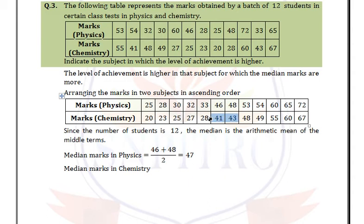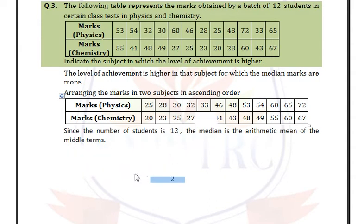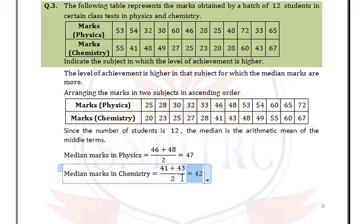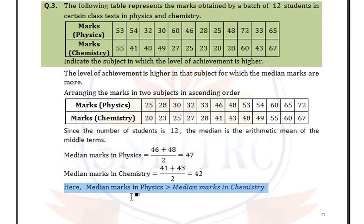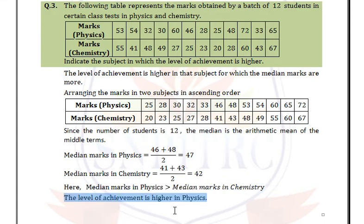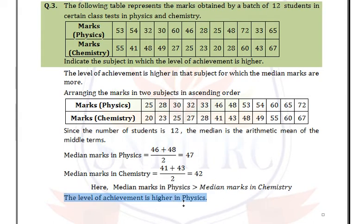The median marks in physics is 47 and in chemistry is 42. Since the median marks in physics are greater than the median marks in chemistry, the level of achievement is higher in physics.